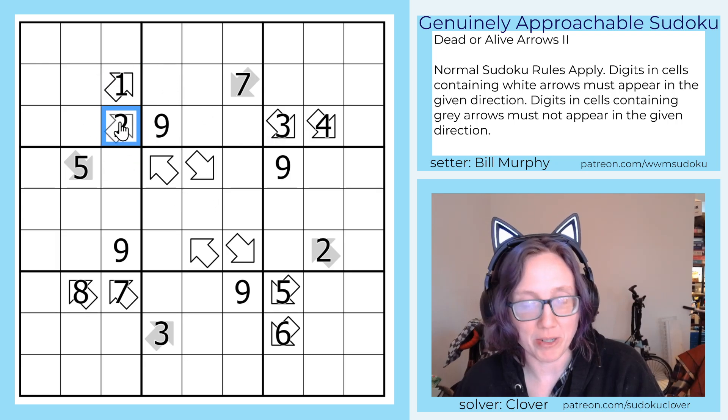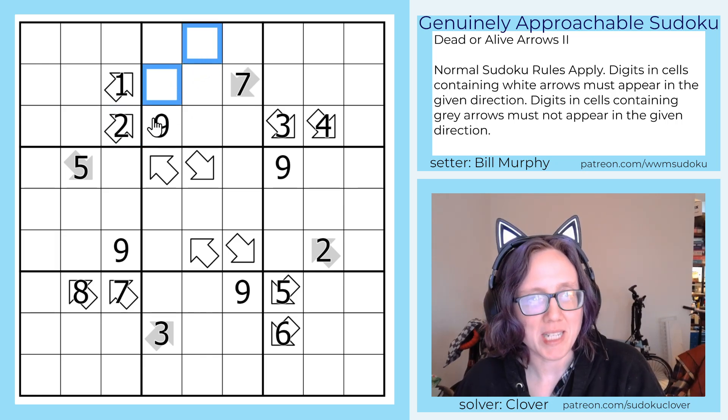For example, because this white arrow has a 2 in it, one of these cells has to contain a 2.